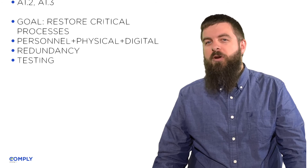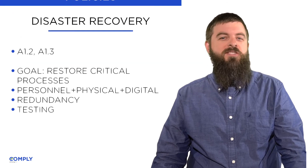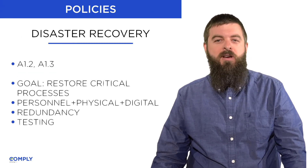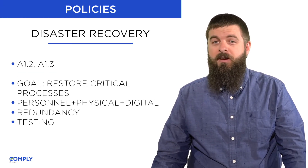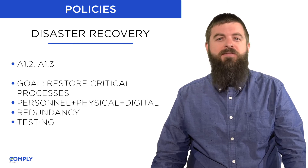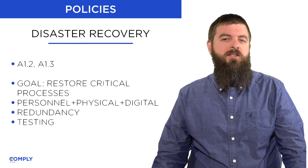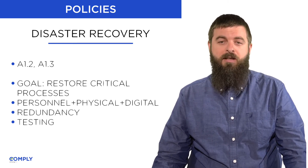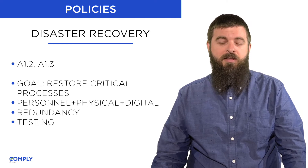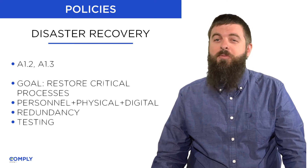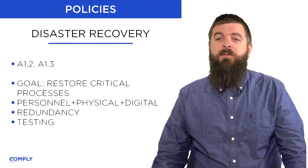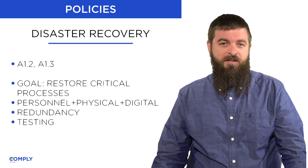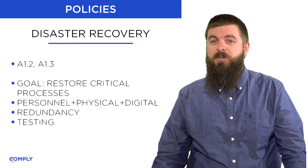The Disaster Recovery Policy addresses controls A.1.2 and A.1.3. This policy defines the activities that are necessary to get critical processes up and running again. The goal is not normalcy, but rather to ensure that a minimum necessary function is restored to your business.